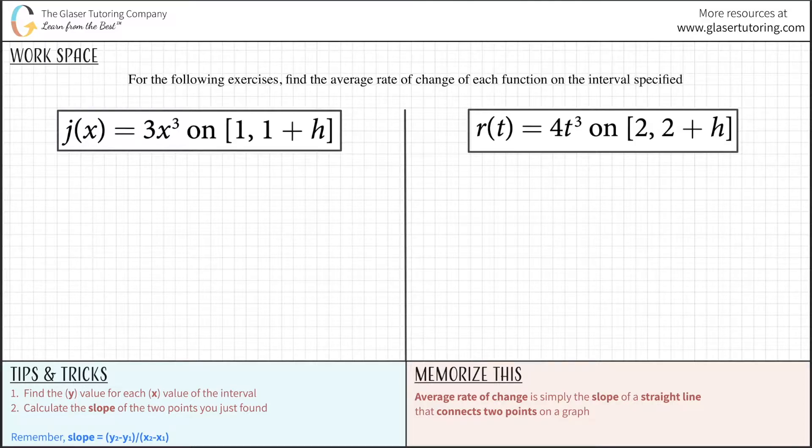To find the average rate of change, remember that it's simply the slope of a straight line connecting two points on a graph. We calculate slope as y2 minus y1 over x2 minus x1, meaning we need two pairs of coordinates.